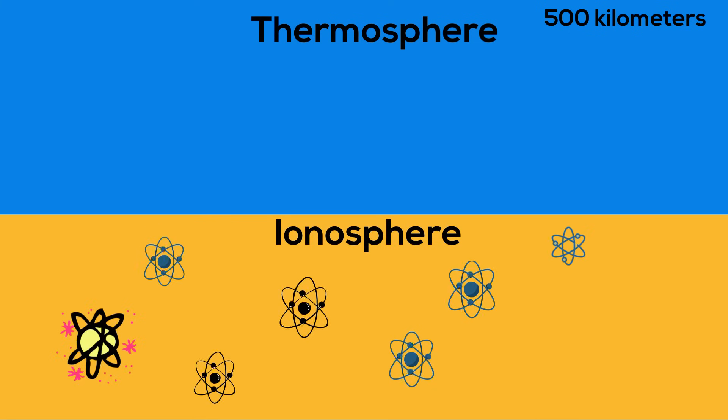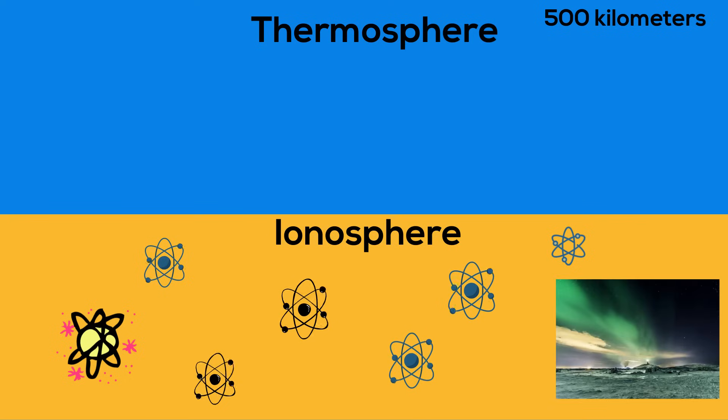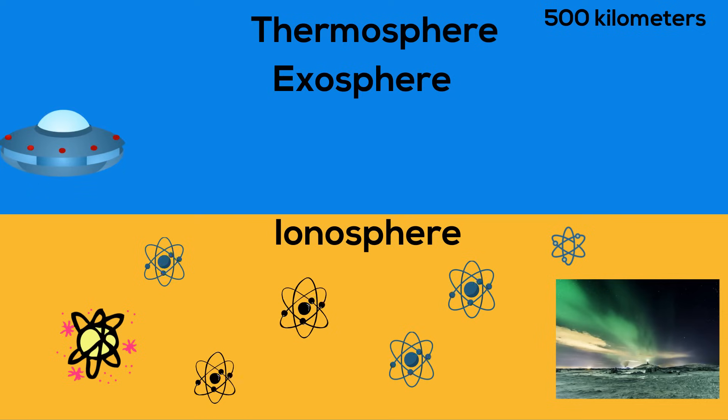First the ionosphere is the lower portion of the thermosphere. It is full of electrically charged atoms and is home of the northern and southern lights, and it reflects back radio waves. The exosphere is above this and is home to the satellites.